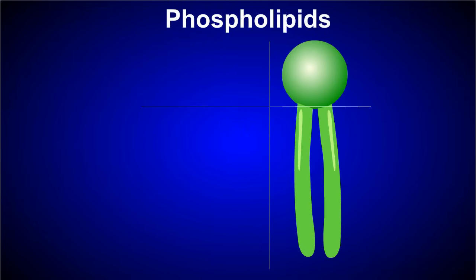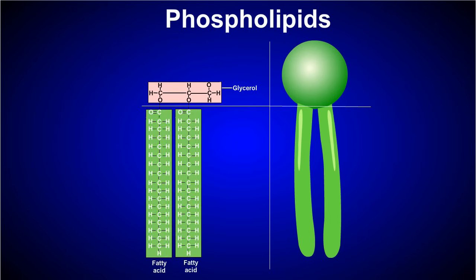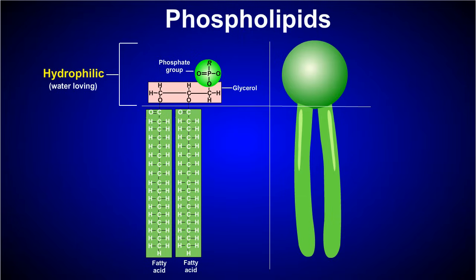Let's move on to the next category of lipids: phospholipids. Phospholipids are similar to triglycerides in that they contain glycerol and two fatty acids. What's different is that a phosphate group, rather than a third fatty acid, is attached to the third carbon of glycerol. The phosphate head of the molecule is hydrophilic, or water loving, meaning that it mixes well with water. The fatty acid tails, however, are hydrophobic, or water hating, and do not mix well with water.